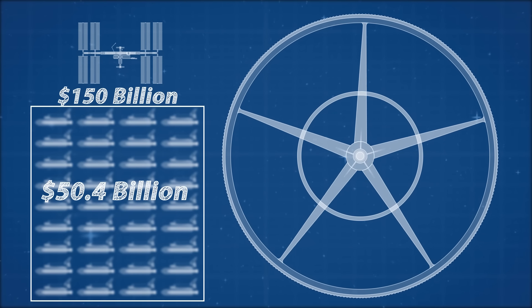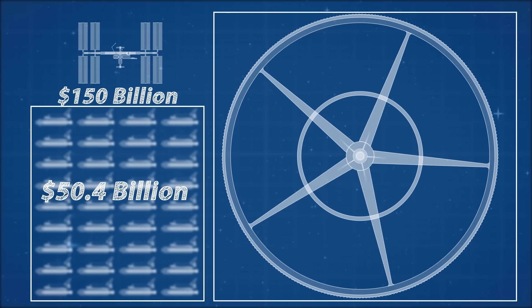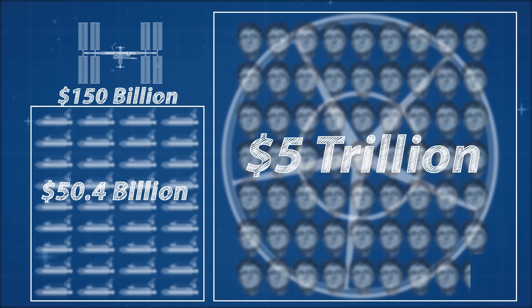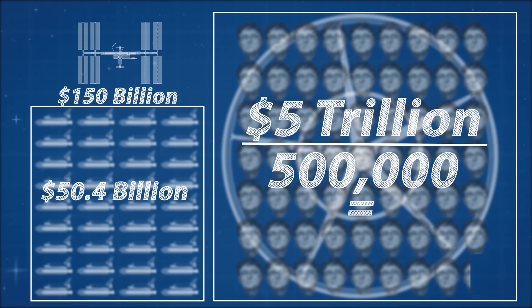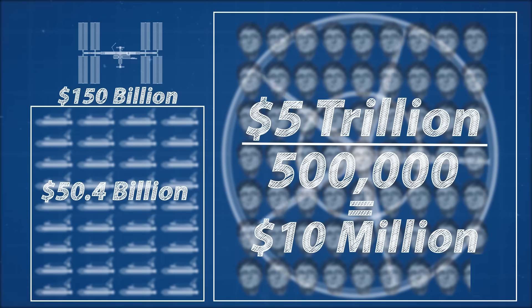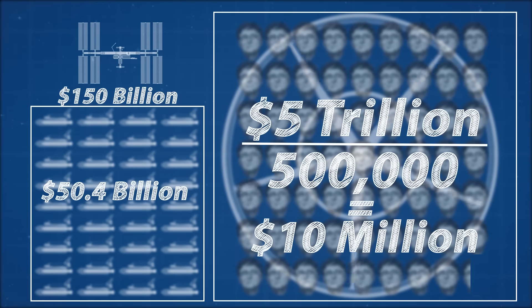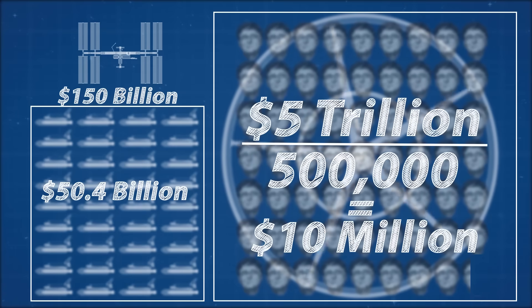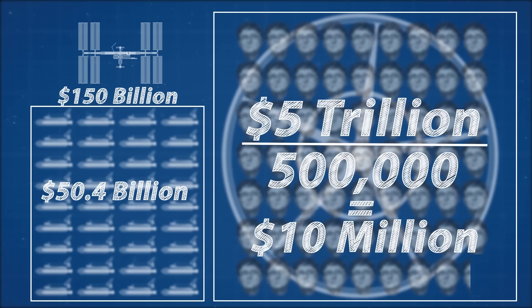A conservative estimate for the cost of Elysium could put it at $5 trillion, that's 62.3 Bill Gates, but there are half a million people on board Elysium. So if the costs were split between everyone, that would be about $10 million each.